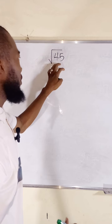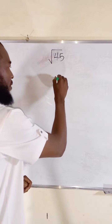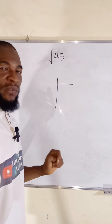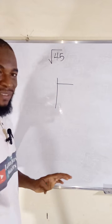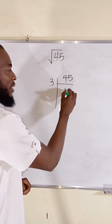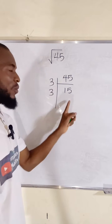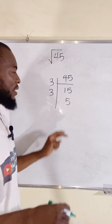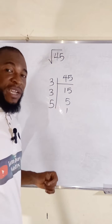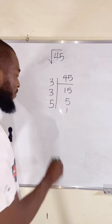We are going to perform a successive division of 45 using only prime numbers. 2 is the smallest prime number but it cannot go into 45 without remainder. The next one is 3. So our 45 is here — 3 can go into 45 fifteen times. Another prime number, 3 can go into 15 five times. Next prime number is 5, one time. So what we have is 3 times 3 times 5, which is equal to 45.